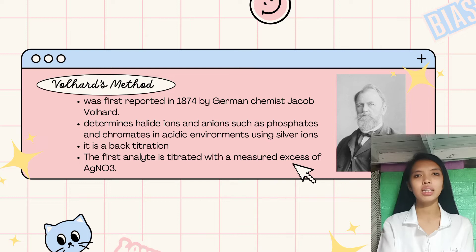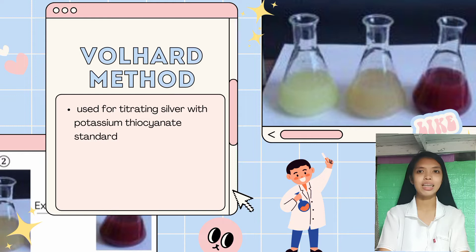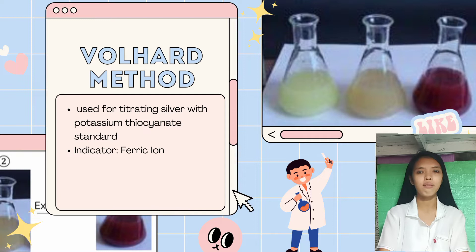The Volhard method is an indirect or back-titration method in which an excess of a standard solution of silver nitrate is added to a chloride-containing sample solution. The excess silver is then back-titrated using a standardized solution of potassium or ammonium thiocyanate with ferric ion as an indicator. The amount of silver precipitated with chloride in the sample is calculated by subtracting the excess silver from the original silver content.